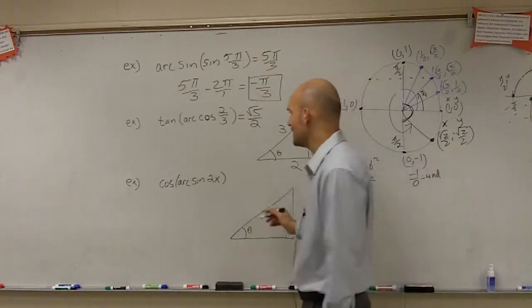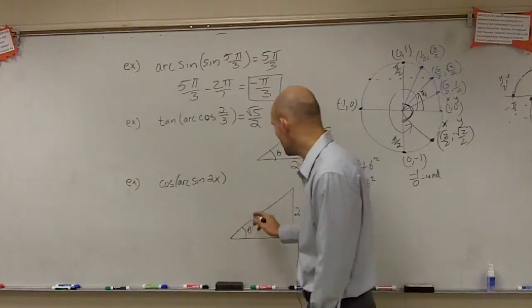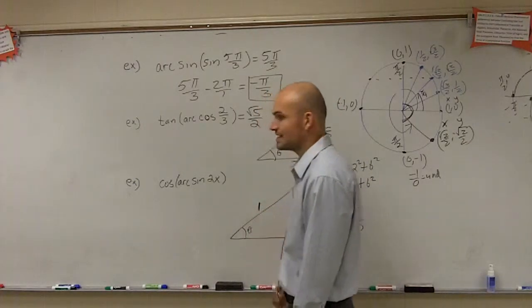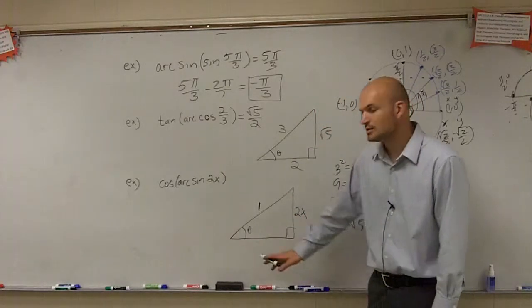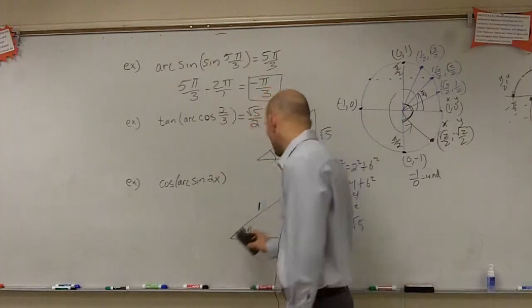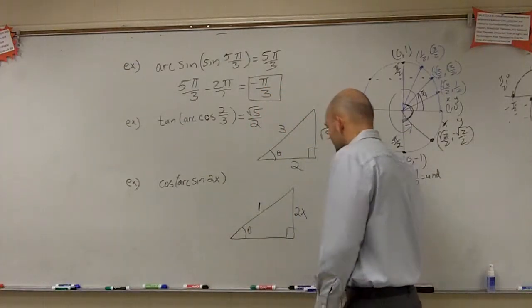So here, I have sine of x, which is 2x. It's not as a ratio. Therefore, this actually has my ratio equal to one, or my hypotenuse is going to equal one. So again, I need to figure out my last point. So I'm going to use Pythagorean Theorem to figure this out.